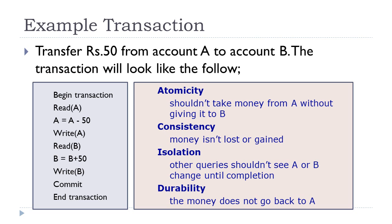Suppose if we execute all the transaction and execute the commit statement, then we must see the new values: A with 50, B with 150. Consistency ensures money is not lost or gained — we do not write a new value of A without updating the B value. Isolation ensures that no other query should see the values of A or B until the transaction completes; those values are not visible to other concurrently executing transactions, and that kind of isolation ensures consistency. Finally, durability means the money does not go back to A — once committed, that money has already gone into B, because the transaction is closed and successfully completed.